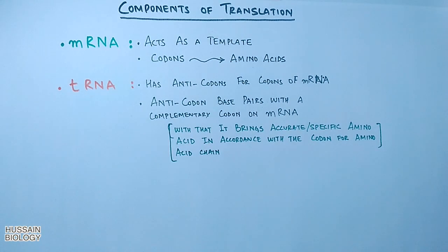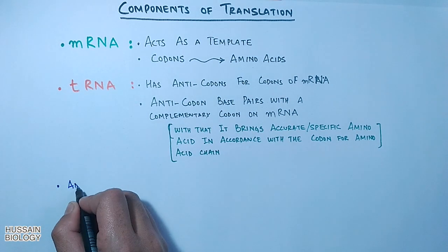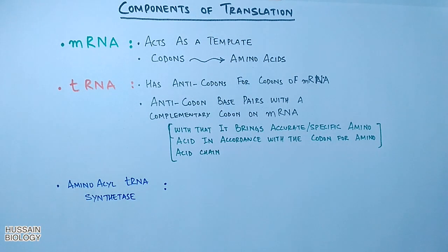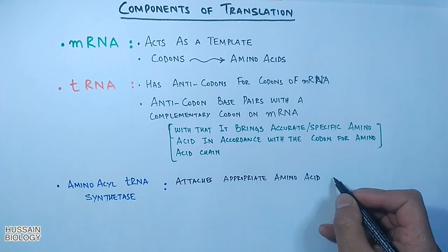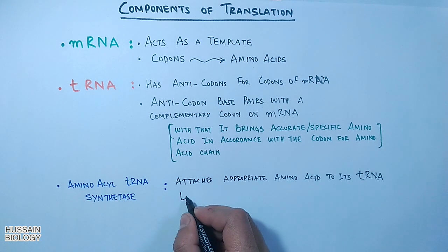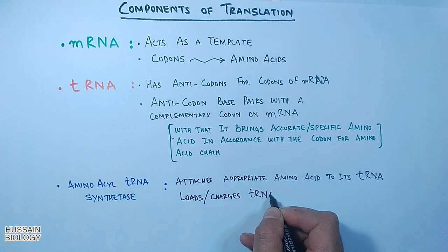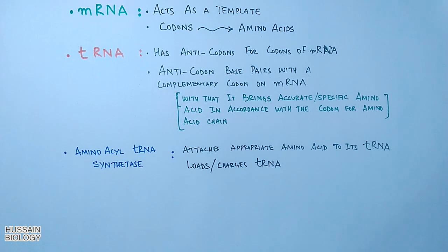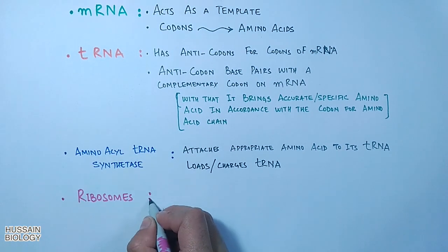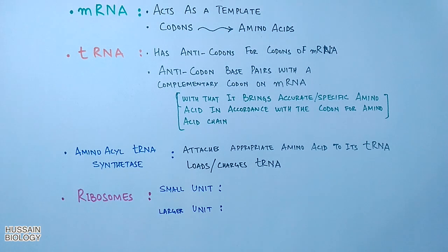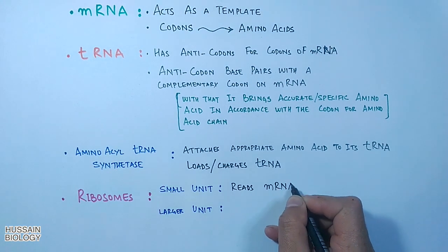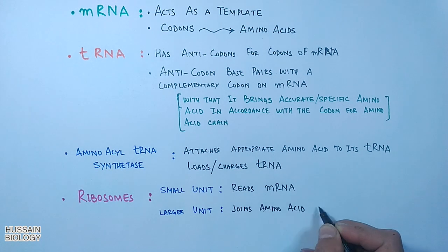Then we have aminoacyl tRNA synthetase. This enzyme attaches appropriate amino acid to its tRNA, so we can say it helps in loading or charging the tRNA. Then we have ribosome where the translation process occurs.